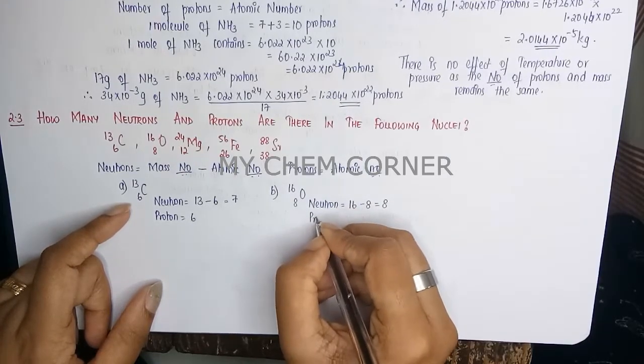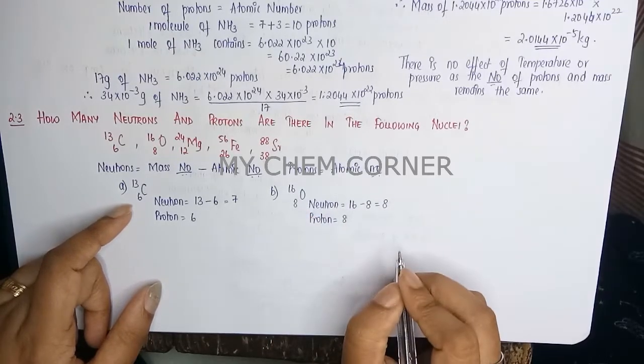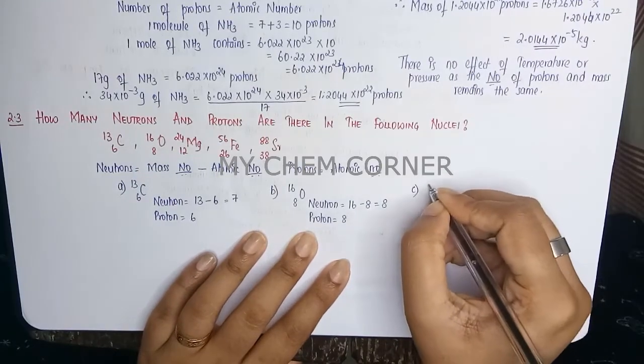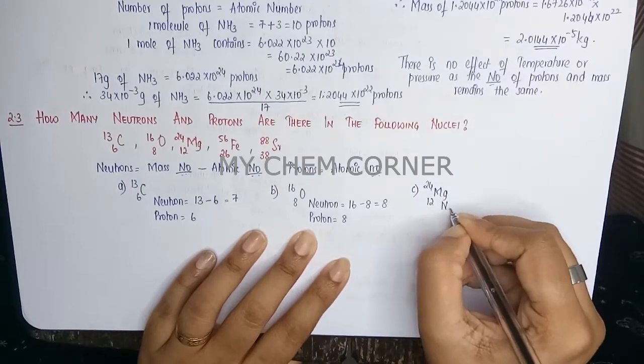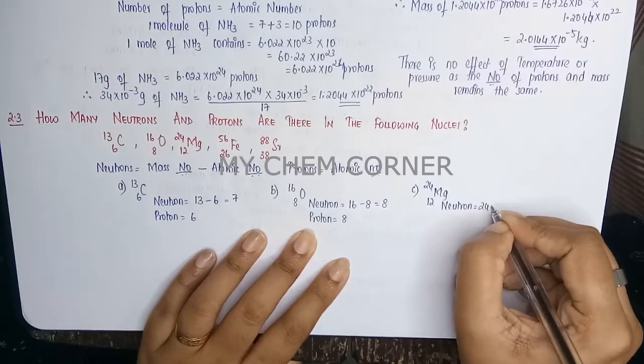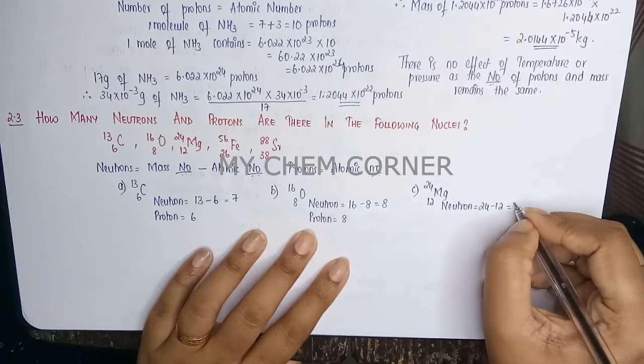Third one is for Magnesium. So Magnesium neutron is 24 minus 12. 24 is the atomic mass, 12 is the atomic number, this is 12, and proton equals 12 which is the atomic number itself.